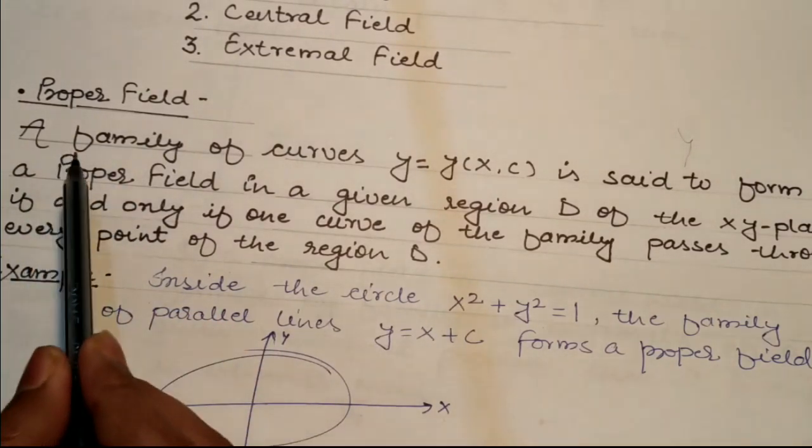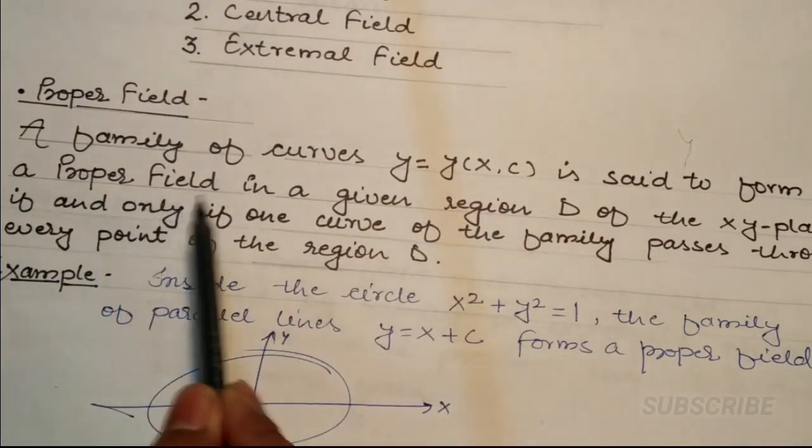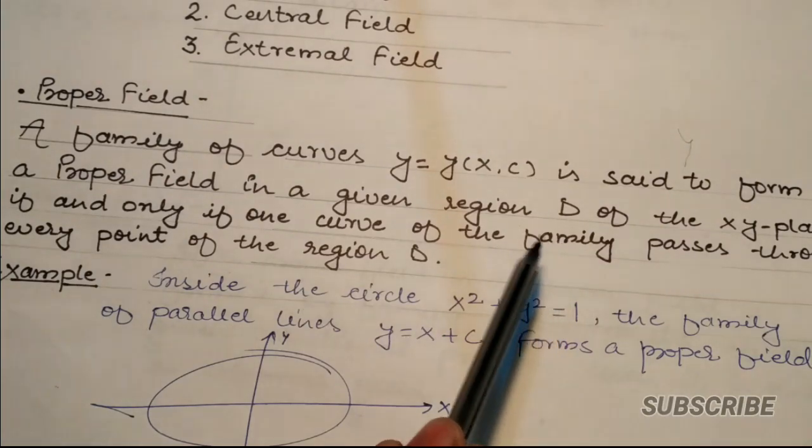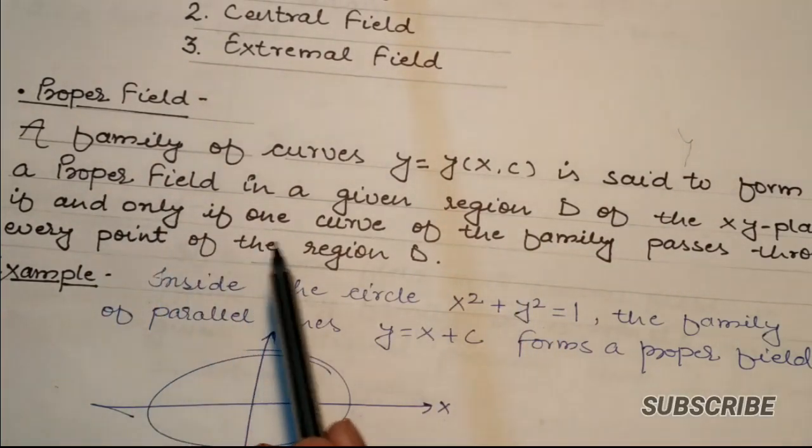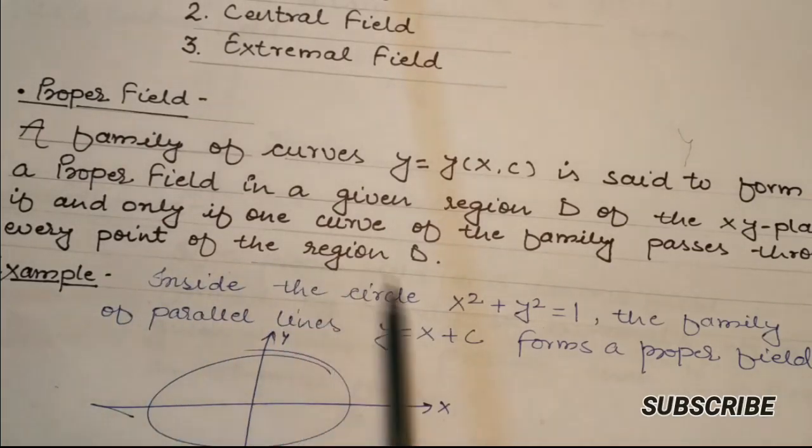A family of curves y = y(x,c) forms a proper field in a given region D of the xy plane if and only if one curve of the family passes through every point of the region D. Let's look at an example.